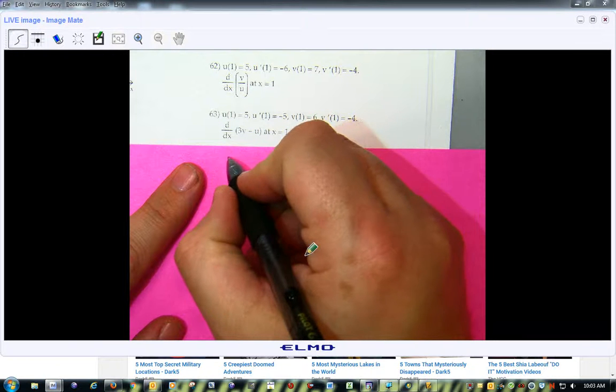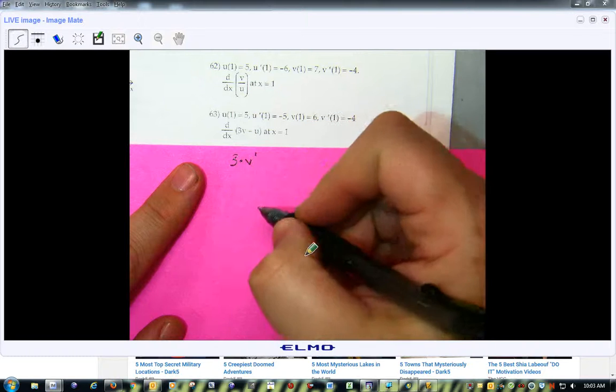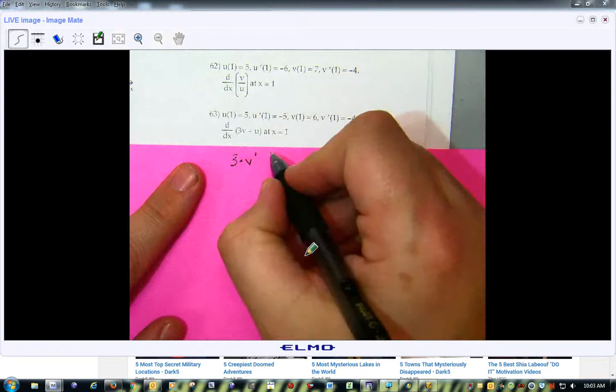we have to say, alright, well, the derivative is going to be 3 times v prime, because we don't know what that is, minus u prime.